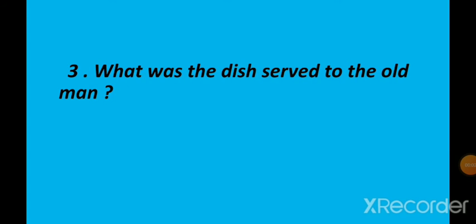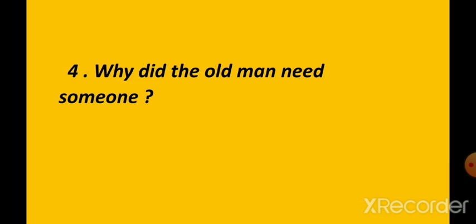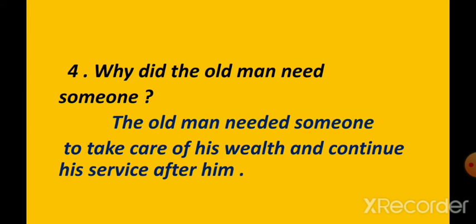Third question: what was the dish served to the old man? The old man was served gruel. Fourth question: why did the old man need someone? The old man needed someone to take care of his wealth and continue his service after him.